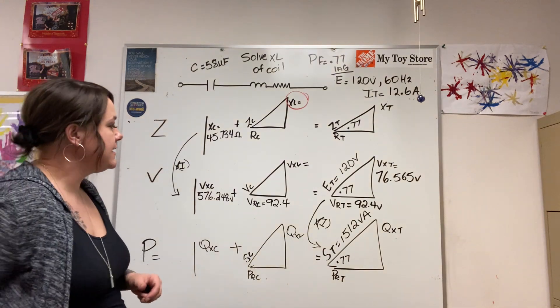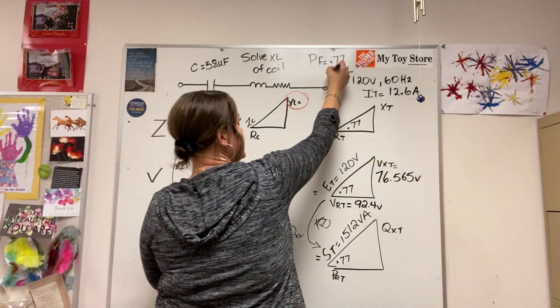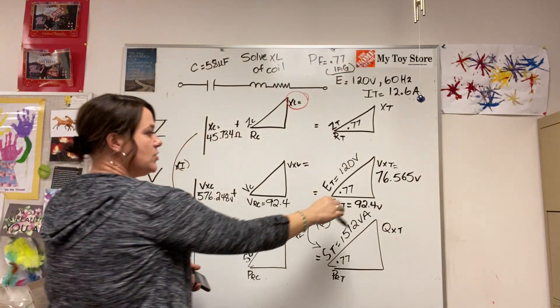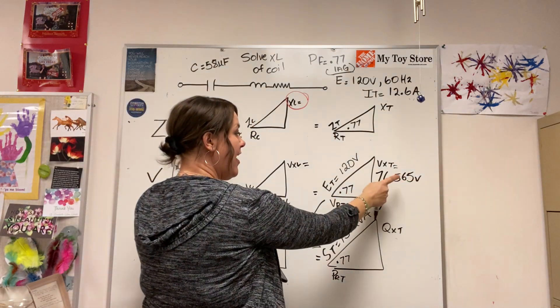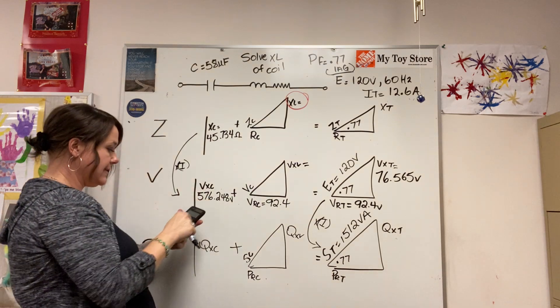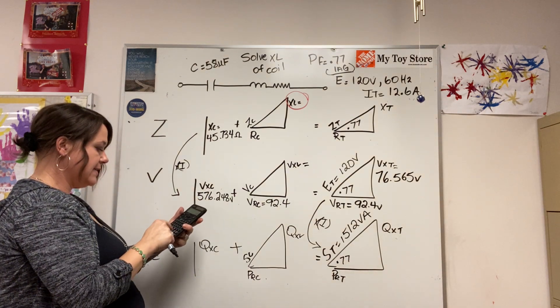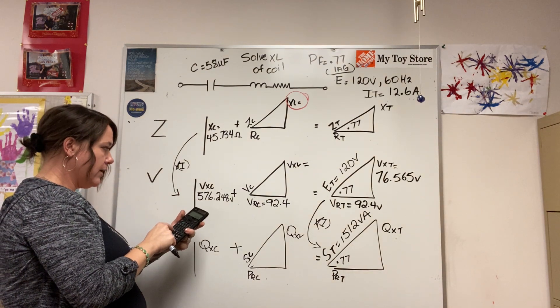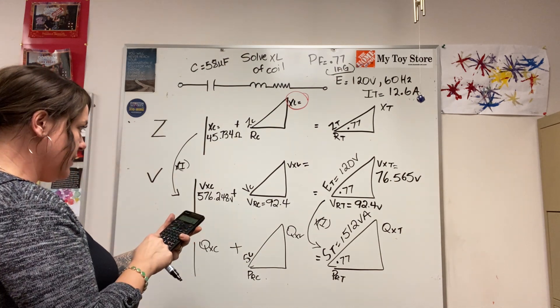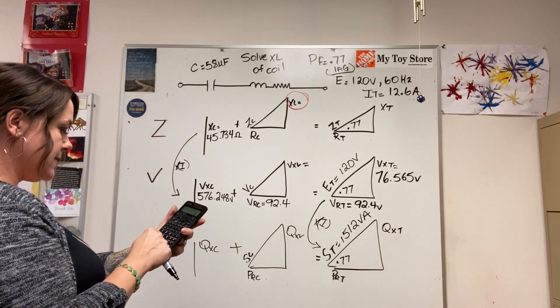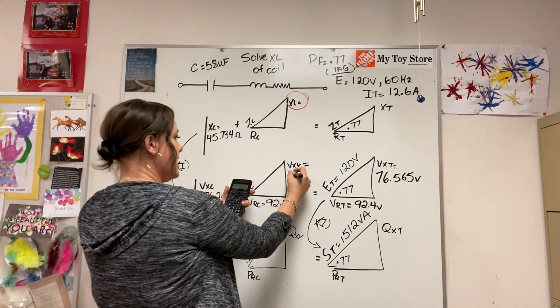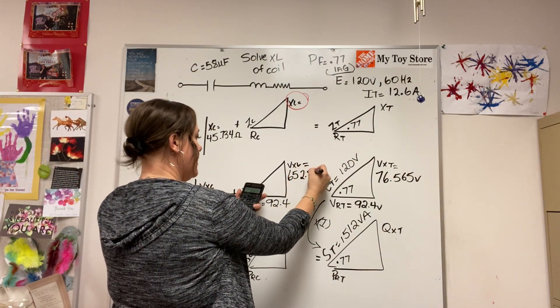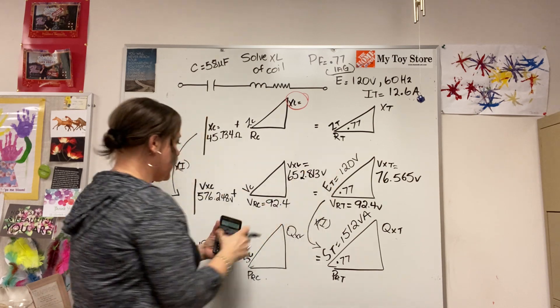So 576, right, because this was the hint - it's lagging. So this is 76.565 volts lagging that would get added to that. So 576.248 plus 76.565 equals a VXL of 652.813 volts.